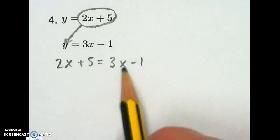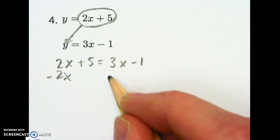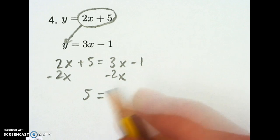I need to get my x's all on one side of the equation, so I'm going to get rid of the 2x on this side by subtracting it off. I've got to do that on the other side. Now I've got 5 equals x minus 1.